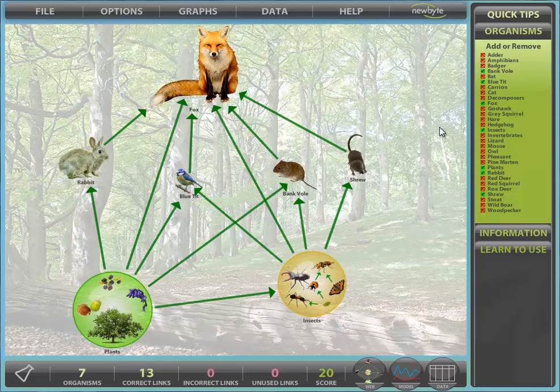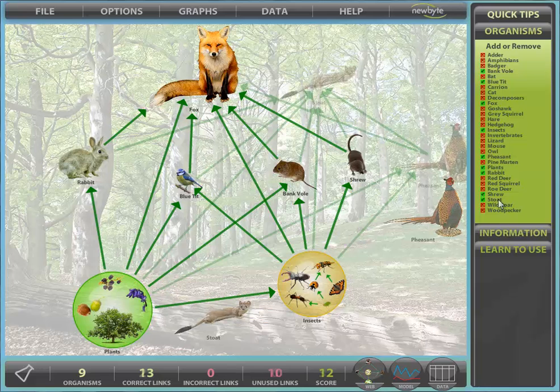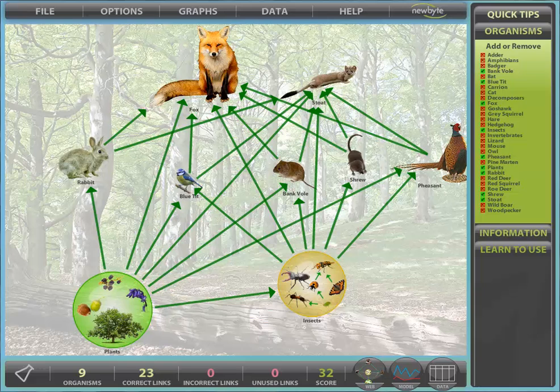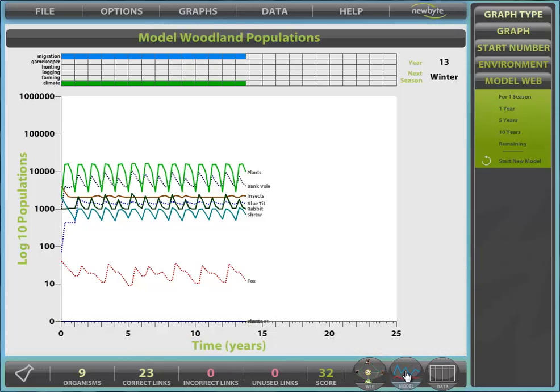We can even change our web at any time during modelling to simulate the introduction or removal of any organism. We'll just return to the construction screen using the web button at the bottom and introduce Pheasant and Stoat to the web. We return to Model and continue modelling.